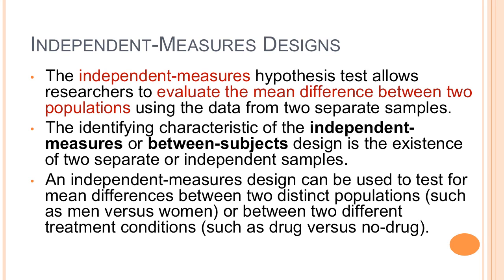Chapter 10 is independent samples. Independent measures hypothesis tests allow researchers to evaluate the mean difference between two populations using the data from two separate samples. The identifying characteristic of an independent measures or between-subjects design is the existence of two separate or independent samples. An independent measures design can be used to test for mean differences between two distinct populations, such as men versus women, or between a control condition versus an actual experimental condition.